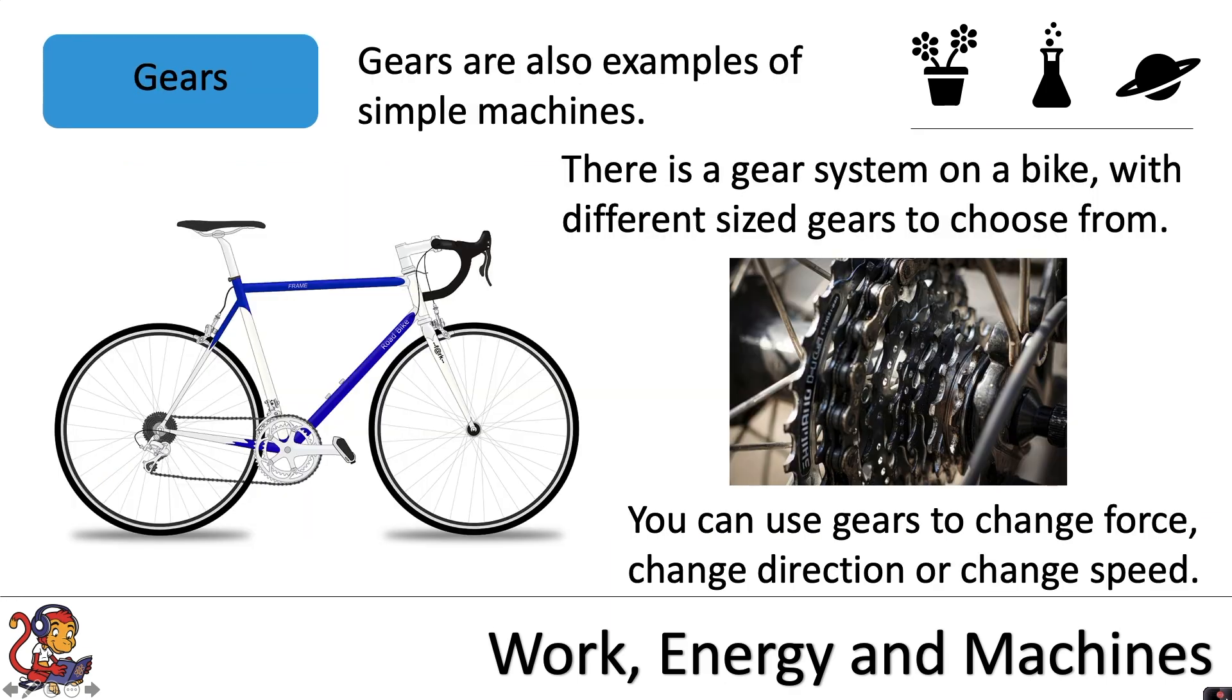Gears are also examples of simple machines. There is a gear system on a bike with different size gears to choose from. You can use gears to change force, direction, or speed.